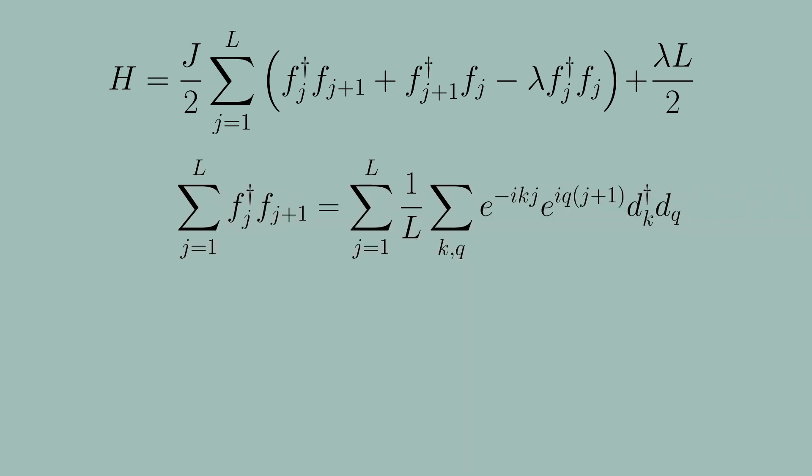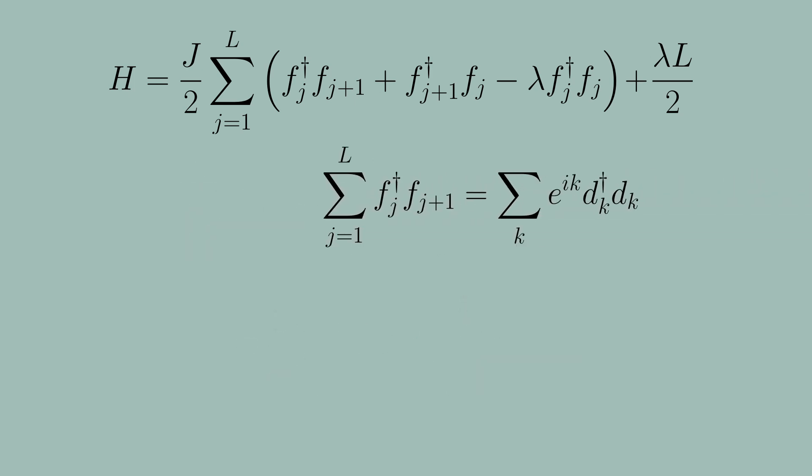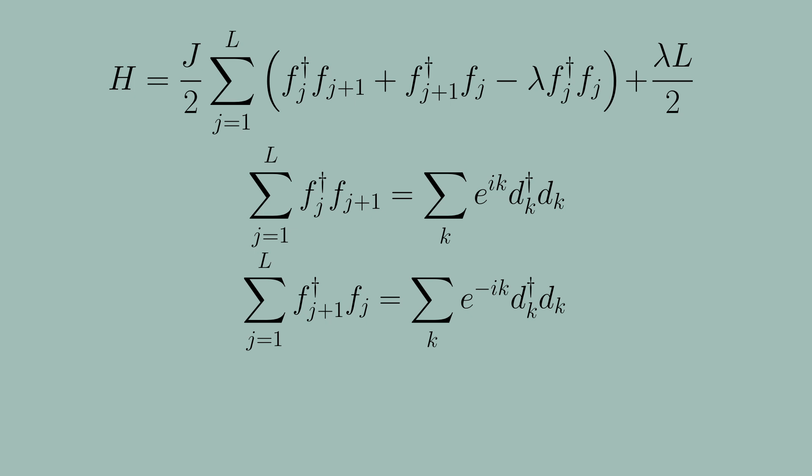So subbing it in we can then interchange these sums and make the j dependent sum as the innermost sum. We know from our previous identity that this summation over j is only non-zero if our discrete momenta are identical so k has to be equal to q and therefore we can simplify the sum to the following expression. Similarly for hopping in the opposite direction gives the following expression and for the on-site potential we just map a sum of number operators to a sum of number operators.